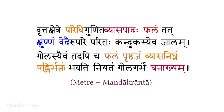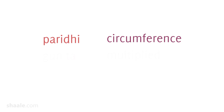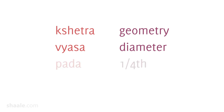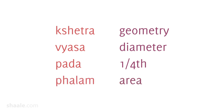Vrittakshetre Paridhi Gunitaha Vyasa Padaha Phalam Tadu Kshunnam Vedai Upariparitaha Kandukasyeva Jalam, Golasivam Tadapi Chaphalam Prishtajam Yasanighanam Shadbhir Bhaktam Bhavati Niyatam Golagarbhe Ghanakhyam. Vrittakshetre means the geometry of a circle; Paridhi means circumference; Gunitaha means multiplied; Vyasa represents the diameter; Pada means one-fourth; and Phalam means area.